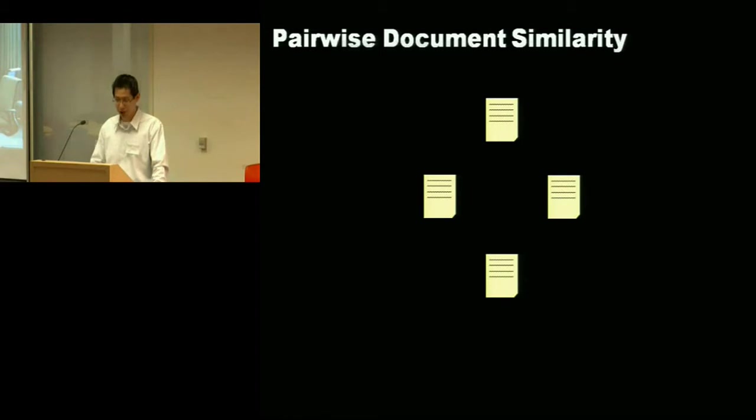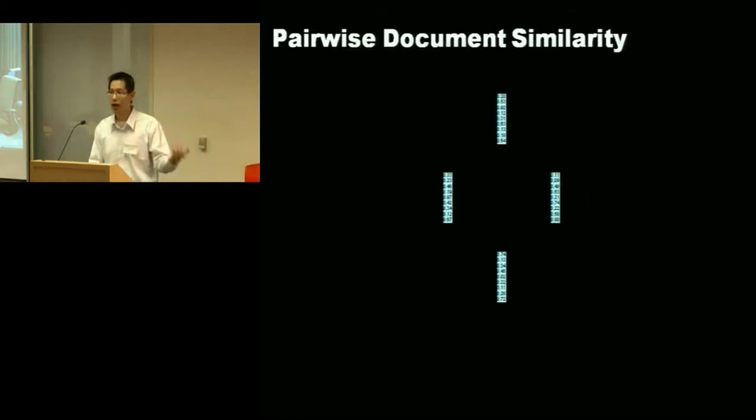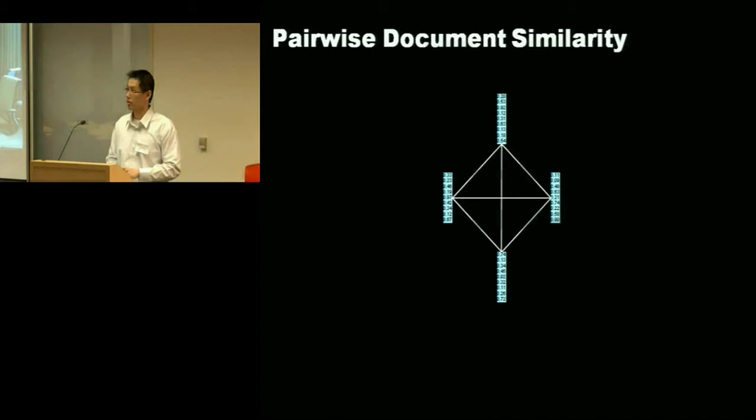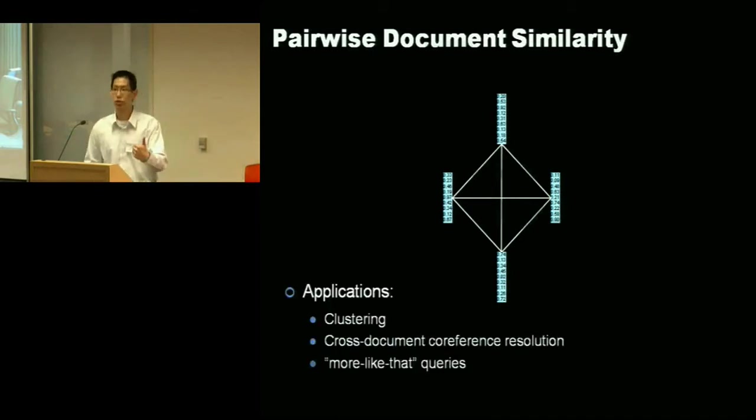So the problem is pairwise document similarity problem. So you have a bunch of documents, you wanna represent them as feature vectors, bag of, convert them into bag of words, convert them then into a weighted feature vector. And you wanna compute pairwise document similarity. So you wanna compare every document with every other document. So why would you wanna do that? A couple reasons. So you might wanna do it for clustering. That's an initial step for clustering. You might want to do it for cross document co-reference resolution, which is actually the application that the student was examining. So you wanna see if this mention of Clinton in this document is the same as this mention of Clinton in another document because the reference might be ambiguous. Well, what you do there is you can convert the, compare the context in which those references appear in. And so that's a pairwise similarity problem. When you're doing more like that queries, you can treat this as a pairwise similarity comparison, pre-store the results, and serve them up online.